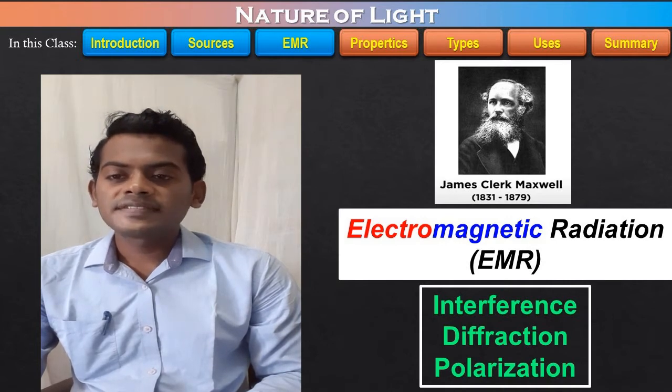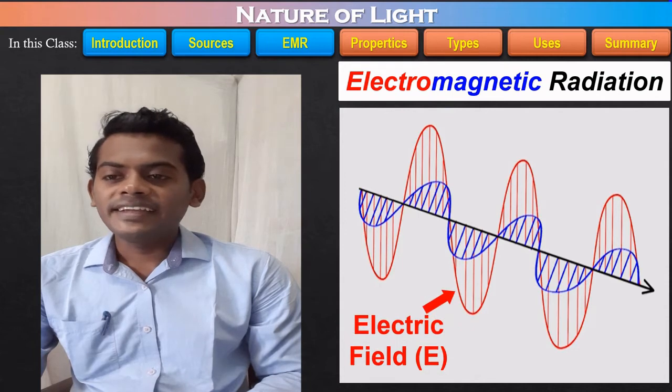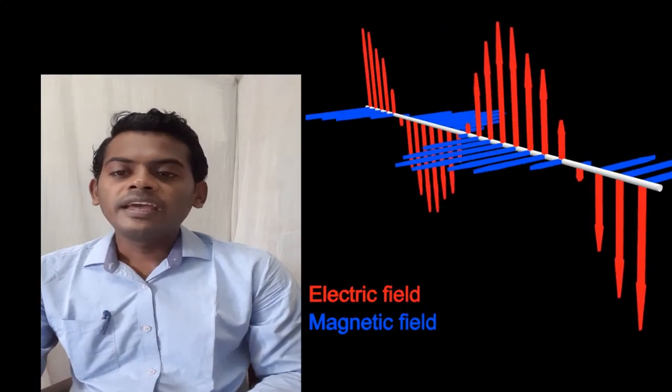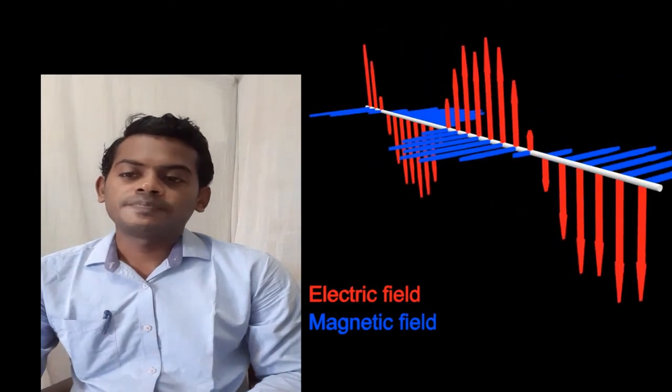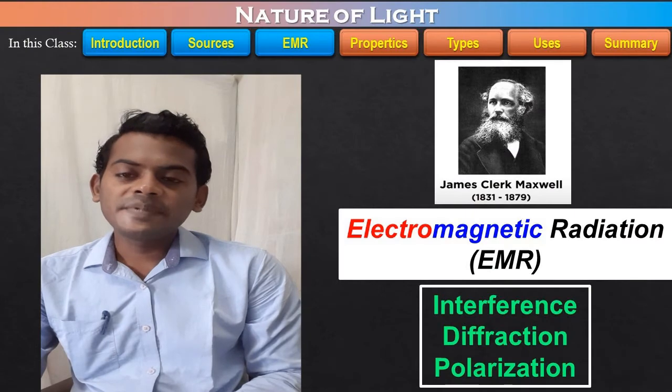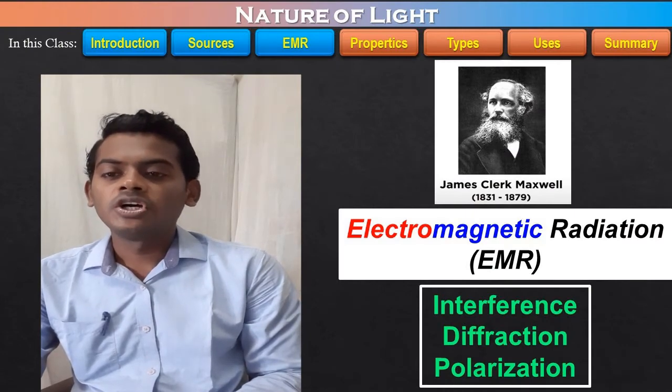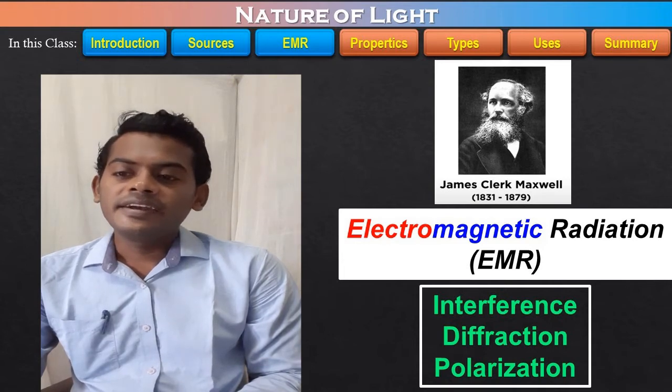This theory depicts light as a transverse wave composed of oscillating electric and magnetic fields which are right-angled to each other and perpendicular to the direction that the wave moves and which can explain the interference, diffraction and the polarization of the light. So, the light is a transverse electromagnetic radiation.